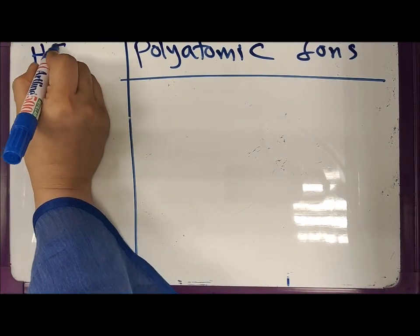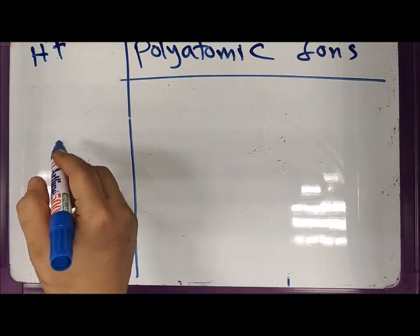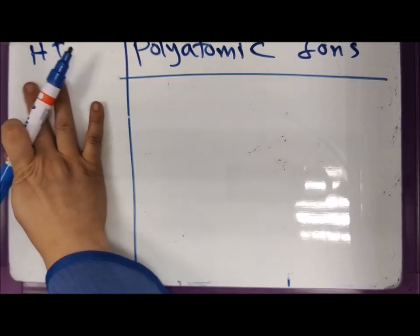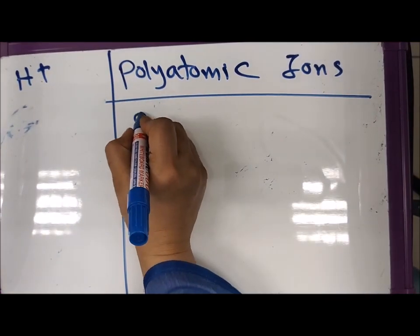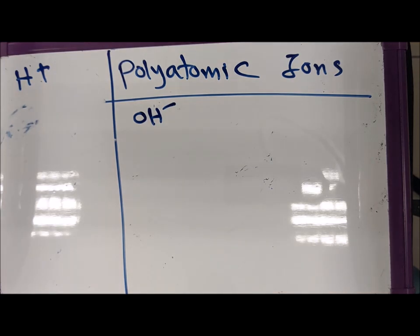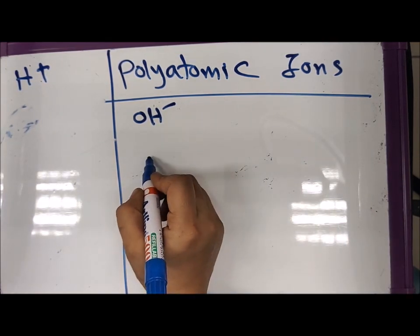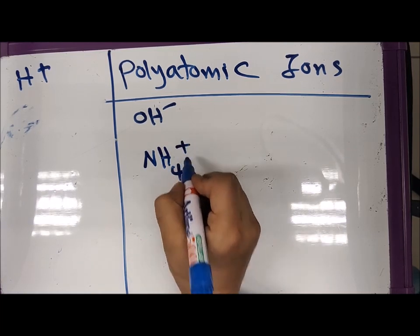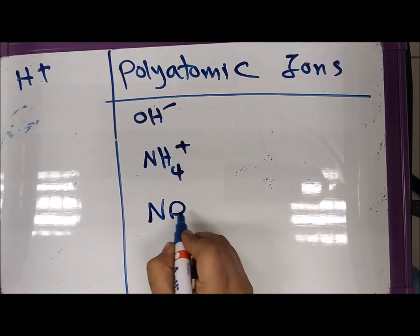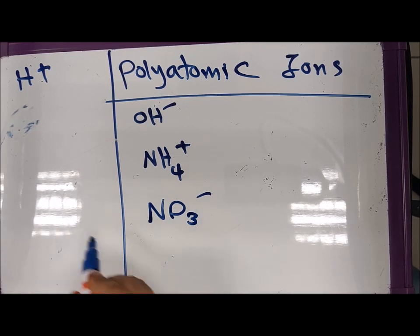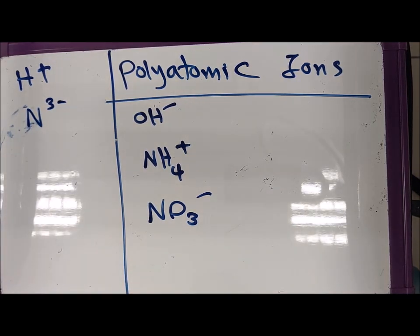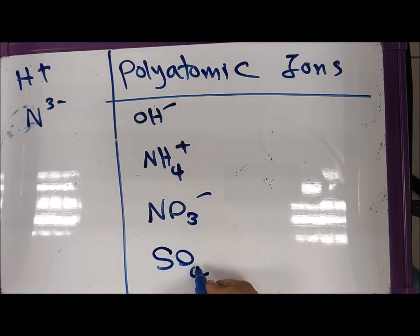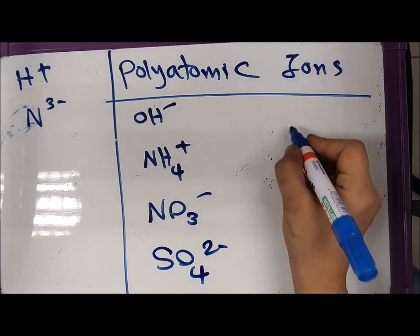The ions you have to know are: hydrogen ion H⁺, hydroxide ion OH⁻, ammonium ion NH₄⁺, nitrate ion NO₃⁻, and sulfate ion SO₄²⁻. You also need to know carbonate CO₃²⁻.